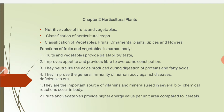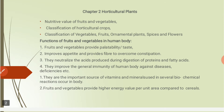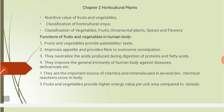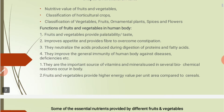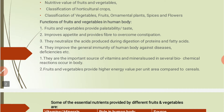Let's see the functions of fruits and vegetables in the human body. Fruits and vegetables provide palatability and taste, improve appetite, and provide fiber to overcome constipation. They also neutralize the acids produced during digestion of proteins and fatty acids. They improve the general immunity of the human body against diseases and deficiencies.